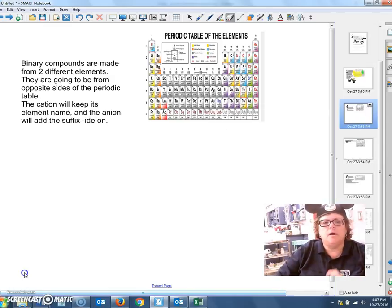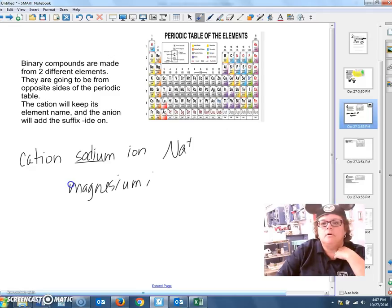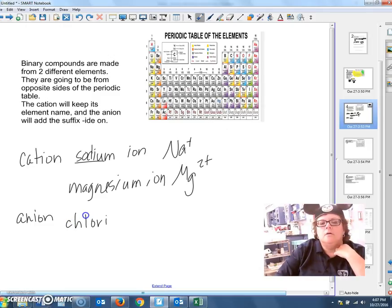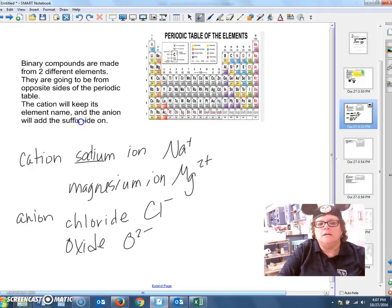So naming. If you have a binary compound, the positive ion, the cation, gets named whatever that element is. Sodium ion. Magnesium ion. Anions, same thing. If we have chlorine, instead of saying a chlorine ion, we say it's a chloride ion. Oxide instead of an oxygen ion. So we put that 'ide' ending in here. And that helps us denote that it's an ion and not a covalent compound.